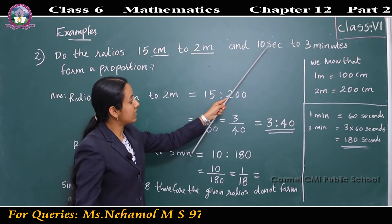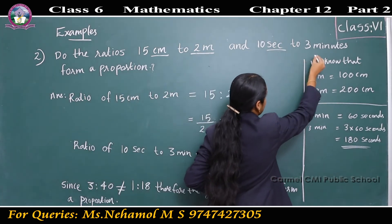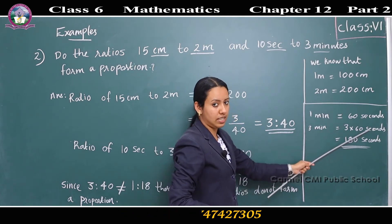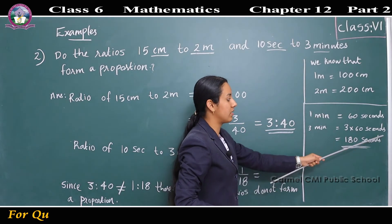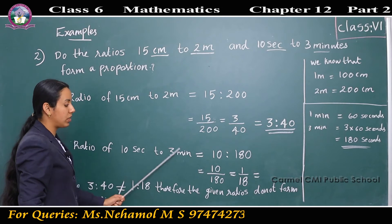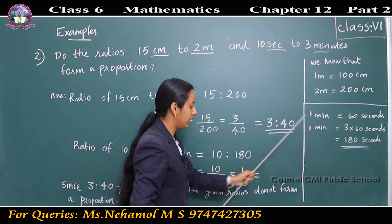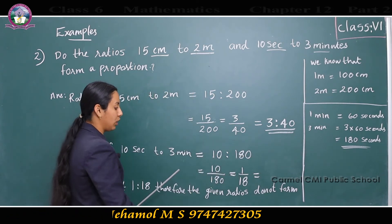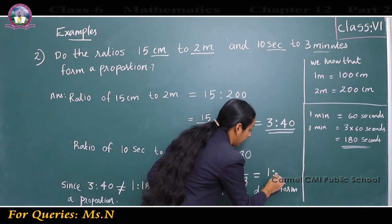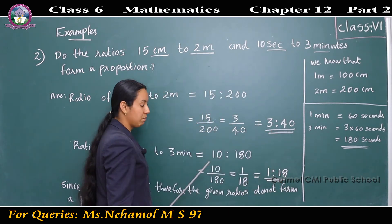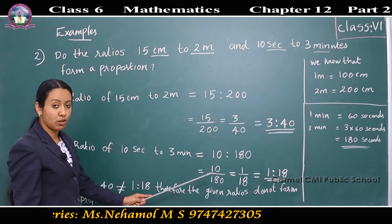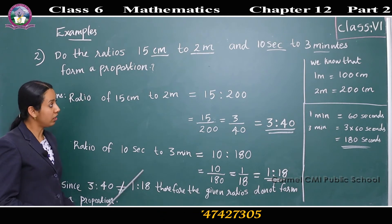For 10 seconds to 3 minutes, the units are different, so we convert minutes to seconds. Since 1 minute equals 60 seconds, 3 minutes equals 180 seconds. The ratio of 10 seconds to 180 seconds is 10 by 180, which equals 1 by 18, that is 1 is to 18. Since 3 is to 40 is not equal to 1 is to 18, the given ratios do not form a proportion.